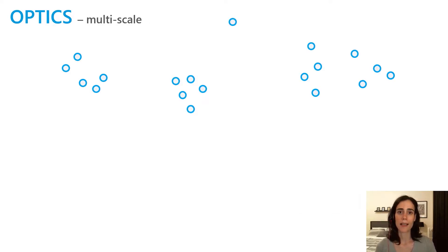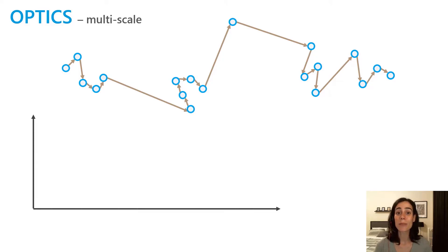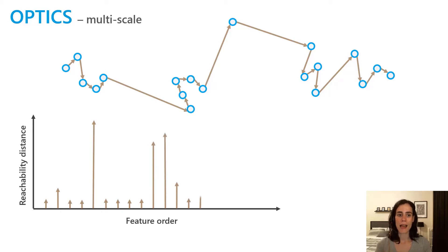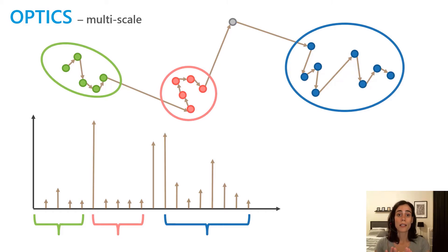The last method is OPTICS, the multi-scale method. With OPTICS we measure the distance from every feature to its next closest feature, then plot those distances along a reachability plot. Points that had a short distance between them get a small value in the reachability plot, while features very far apart get a long reachability distance. The valleys in the reachability plot become the clusters, and the peaks are where clusters split apart or where we find noise because those distances are too great.